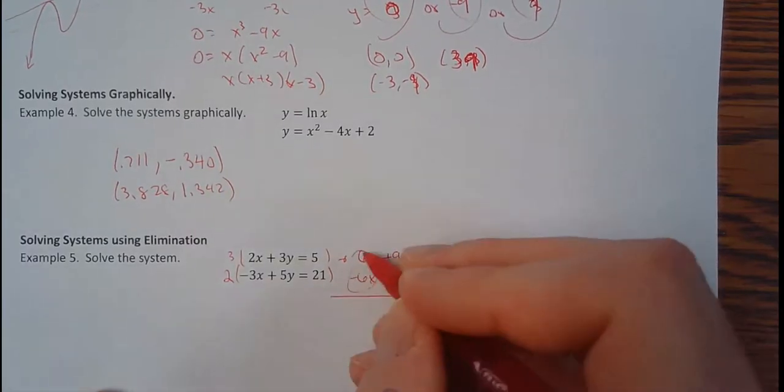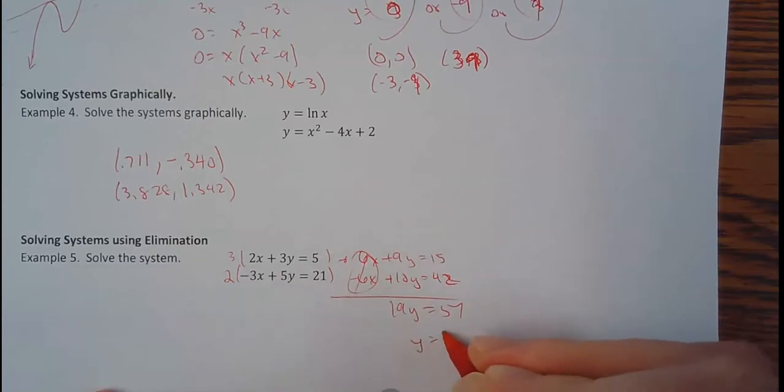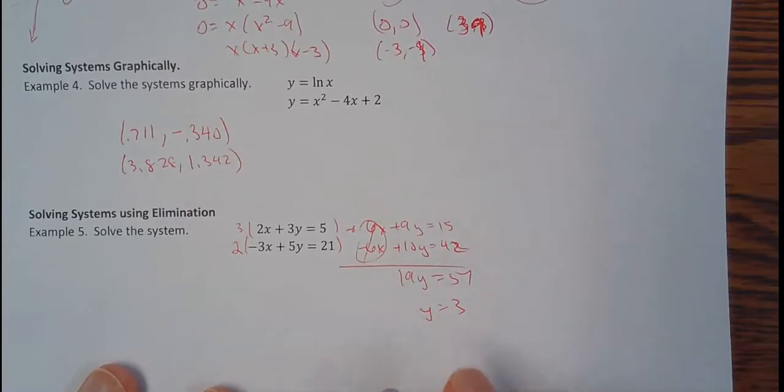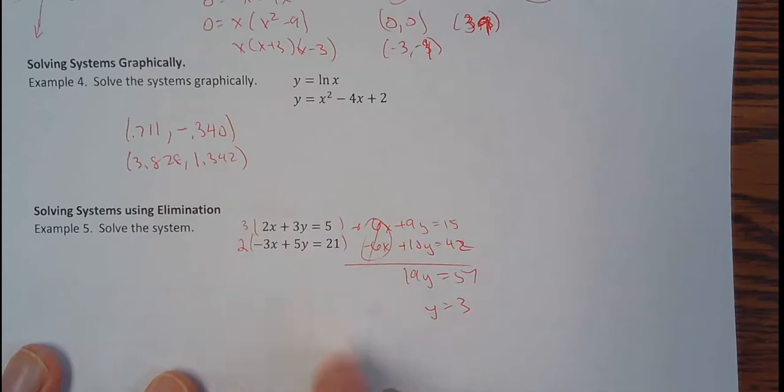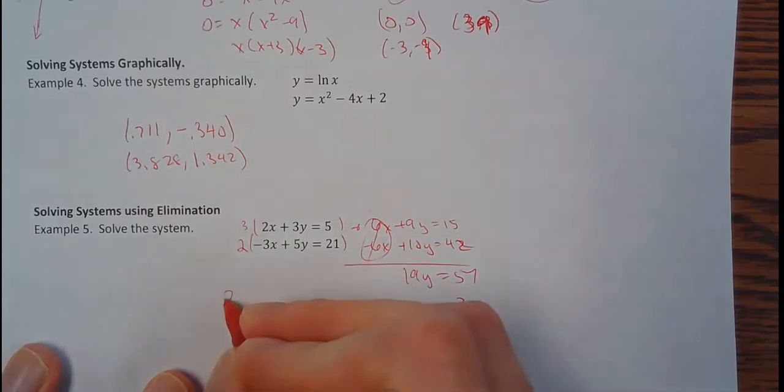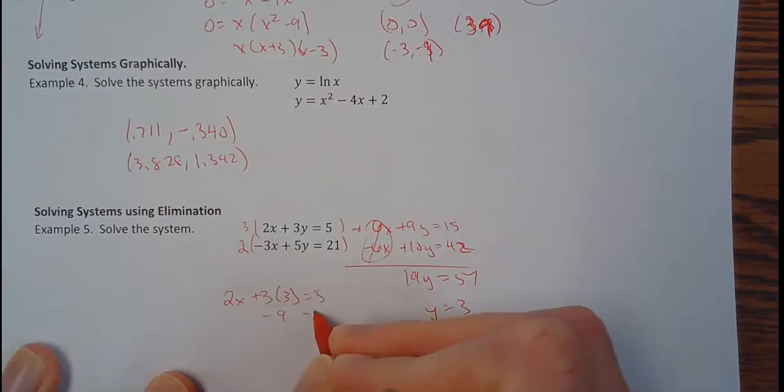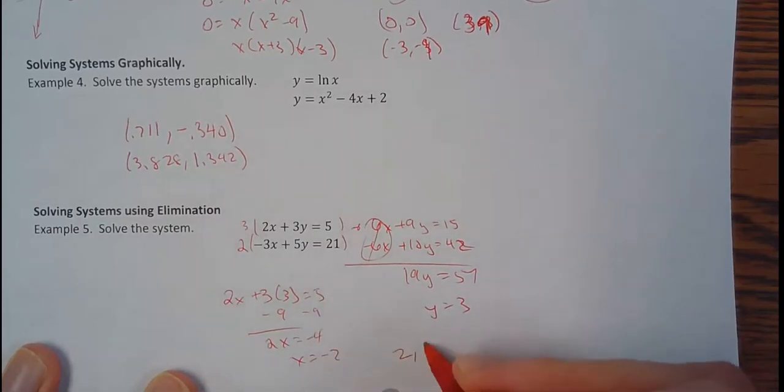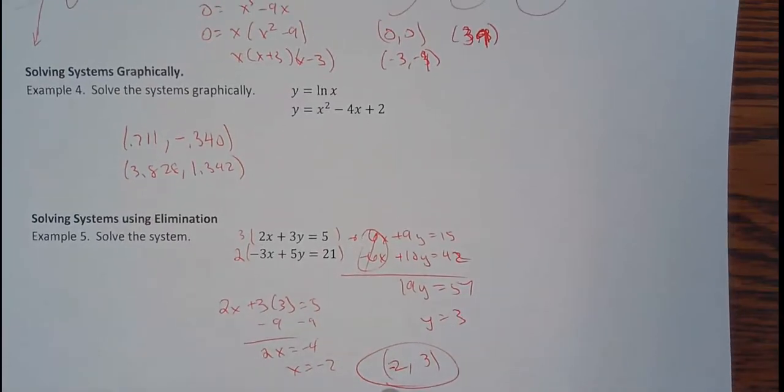Now, if I add straight down, these go away. We have 19y equals 57. So y is 3. So that was pretty quick. We find our first variable a lot faster when we do elimination. Now, plug it in. So pick one of those. It doesn't matter which one. I'll just pick this one. So 2x plus 3 times 3 equals 5. That's 9. So 2x is going to equal negative 4. So x equals negative 2. So negative 2 comma 3 is your solution.